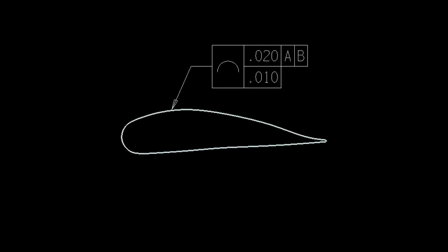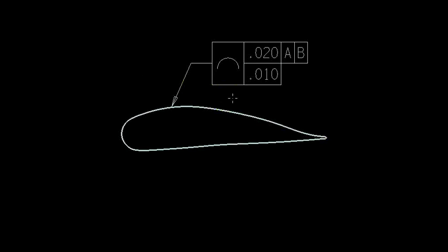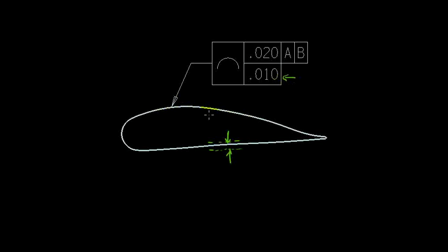The last concept we're going to discuss is a composite feature control frame. In this case there are two different tolerances being applied together. Looking at the lower one first: both are connected to the profile of a line. The first tolerance is 10 thousandths of an inch, and that's saying the actual shape of this blade cross section must be within a 10 thousandths of an inch profile tolerance — controlling shape only, irrespective of position or orientation.